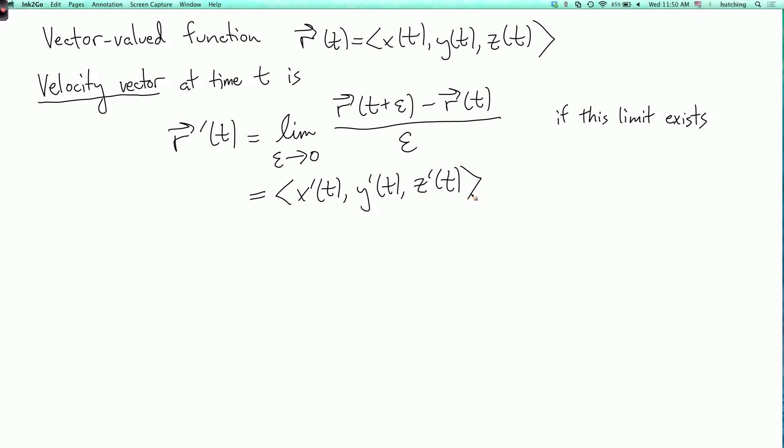Now the geometric meaning is that the velocity vector r prime of t points in a direction tangent to the curve. And the velocity, the length of the velocity vector, this is the speed at time t.